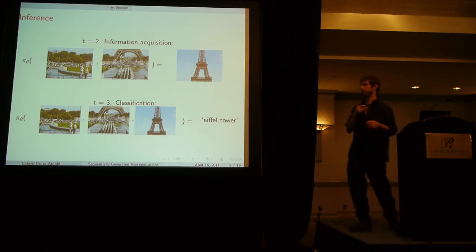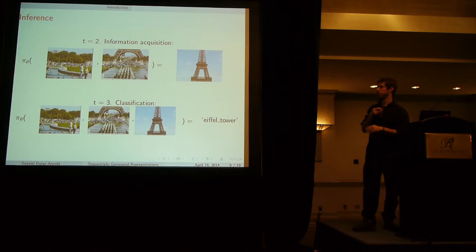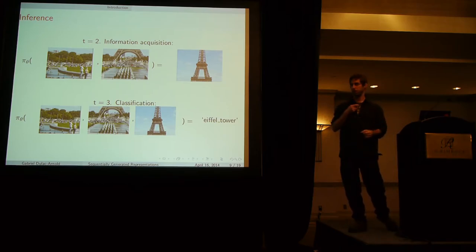Here's kind of an example of how it can work. Let's say we're on the second step of our classification. We've seen these two regions. This classifier tells us, oh, well, then I should look at the central region of this image. That's the center of our wonderful tower.